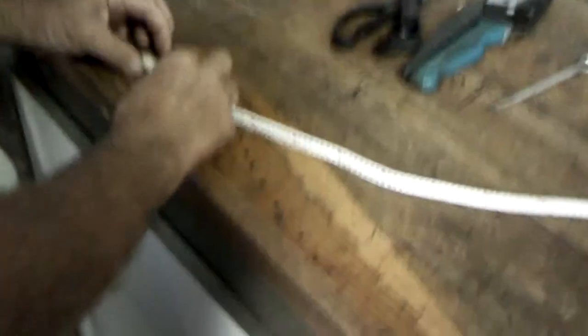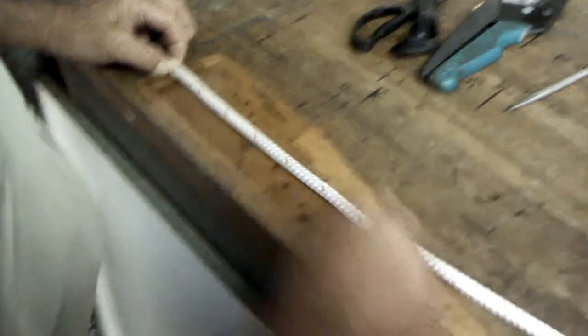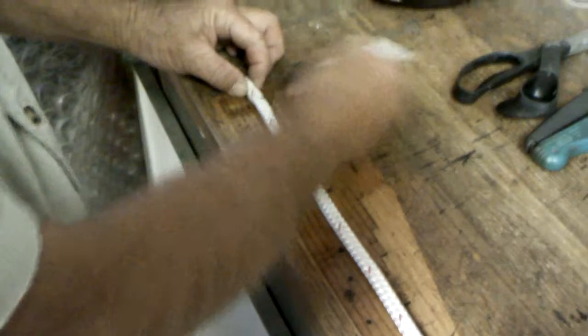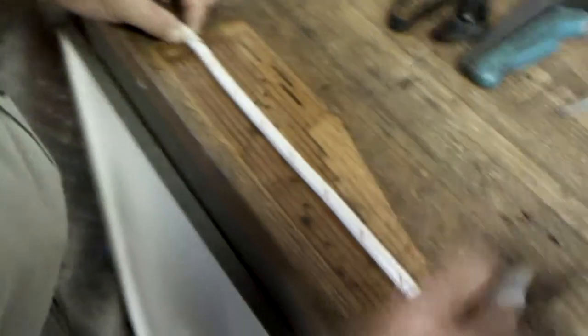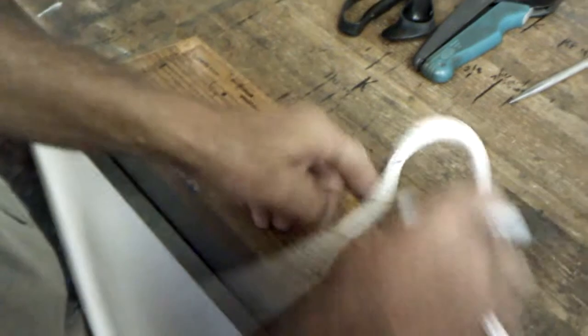Here we are going to measure out our splice lines. Here is our first mark. Here is our second mark which goes to one full fid length.